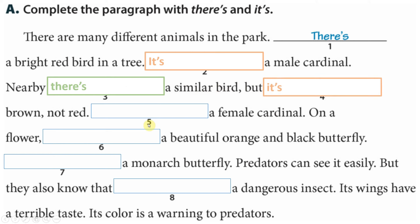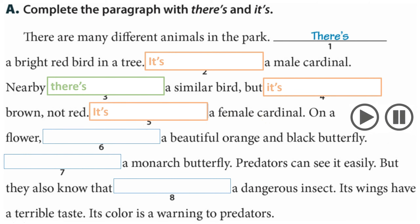For number five, it's actually the same case, because we describe this bird by saying it's a female cardinal. Now I advise you to pause this video and have a look at numbers six, seven, and eight, and try to find the right answer. After a few seconds I will give you the answers, so please pause the video and practice this skill.